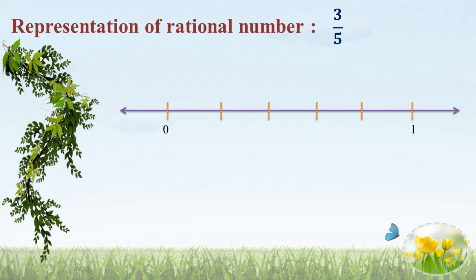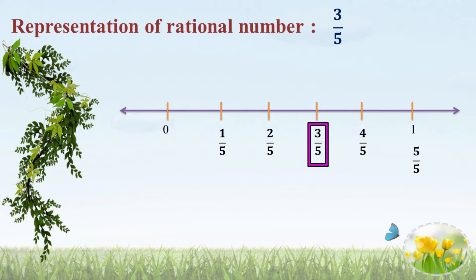The denominator 5 is common for every number after 0. The numerator increases by 1: the first number is 1 by 5, next is 2 by 5, then 3 by 5, 4 by 5, and the fifth is 5 by 5, which equals 1. So 3 by 5 is located between 2 by 5 and 4 by 5.